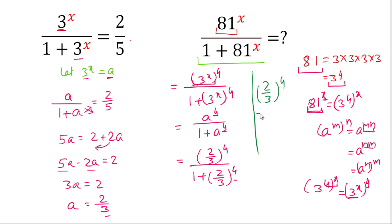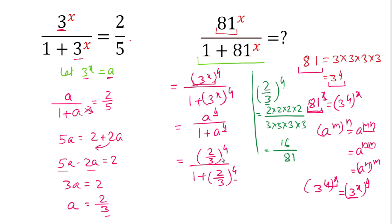We calculate (2 by 3) to the power 4: this is 2 multiplied by 2 multiplied by 2 multiplied by 2 in the numerator, and 3 multiplied by 3 multiplied by 3 multiplied by 3 in the denominator. So 2 to the 4 is 16 and 3 to the 4 is 81. Therefore in place of (2 by 3) to the power 4 we write 16 by 81, giving us 16 by 81 divided by 1 plus 16 by 81.